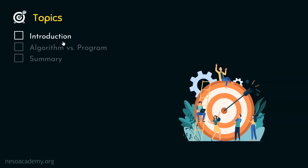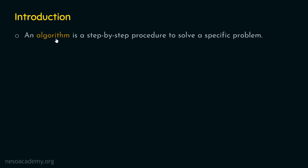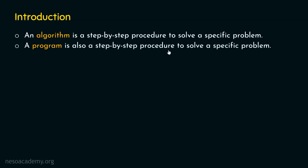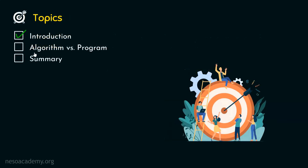Let's dive into the introduction to algorithm versus program first. What is an algorithm? We understood in the last lecture that an algorithm is a step-by-step procedure to solve a specific problem. We saw how to find a contact in a contact list and wrote an algorithm for that. On the other hand, a program is also a step-by-step procedure to solve a specific problem. It seems like both are the same, but they are different in reality.